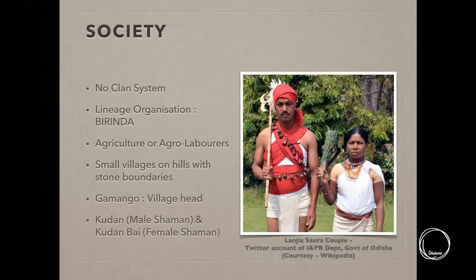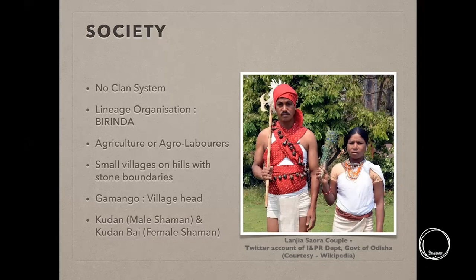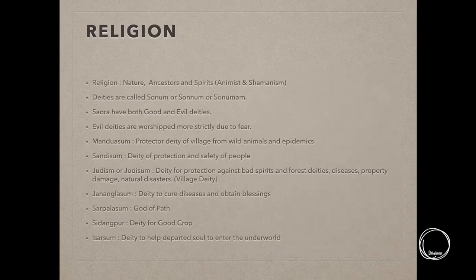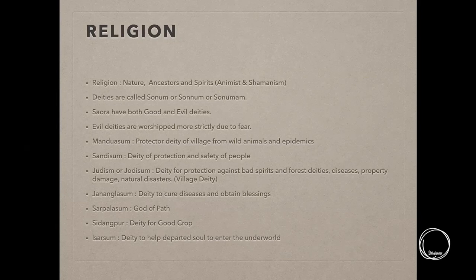The Saura do not have a clan system — they are all considered equal — but they have a system of lineage organization called Birinda. They are agriculturalists and agro-laborers with very small villages on hills marked by stone boundaries. The village head is called Gumango. Shamanism in their society includes both men and women — the male shaman is called Kudan and the female shaman is called Kudanbai.